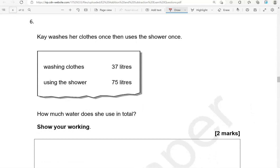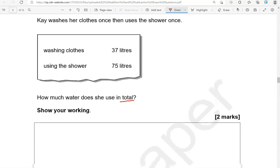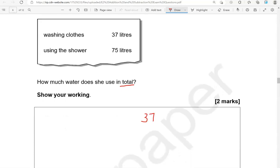K washes her clothes once, then uses the shower once. Washing clothes spends 37 litres, using the shower spends 75 litres. How much water does she use in total? So that is combined for both washing clothes and using the shower. Show your working. So we're going to do 37 add 75. 7 and 5, that is 12, so 2 down and 1 carried over. 3 and 7, that is 10, and the one we carried over, that makes 11. So 112 litres in total.